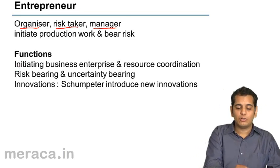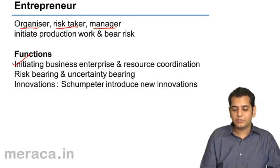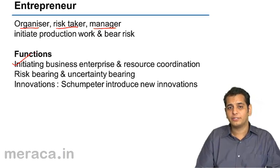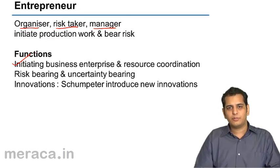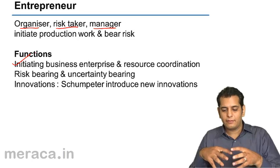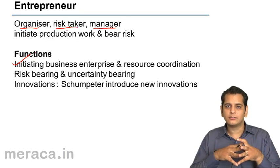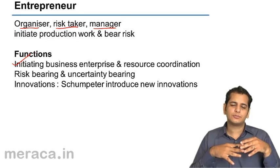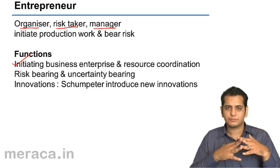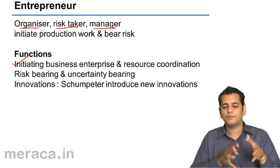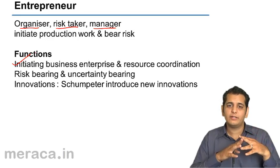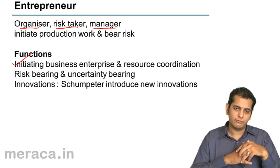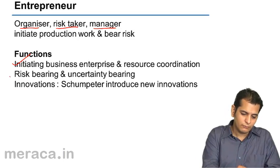The first function is initiating a business enterprise and resource coordination. The entrepreneur brings all the resources and factors of production together and helps them coordinate with each other. Once coordination is established, production takes place. It is his job to bring each factor and resource together and manage them so that production can take place productively.